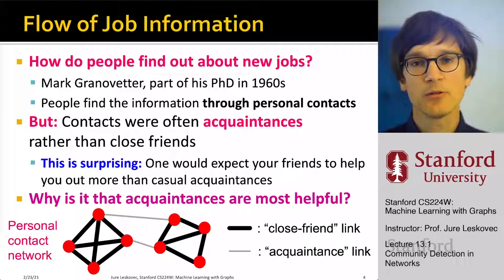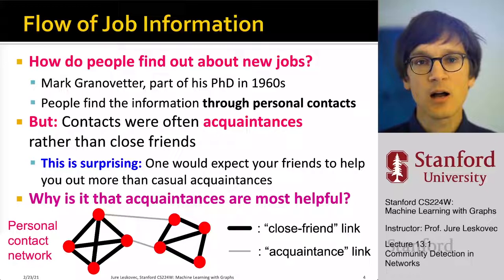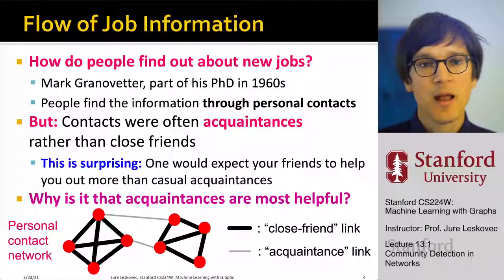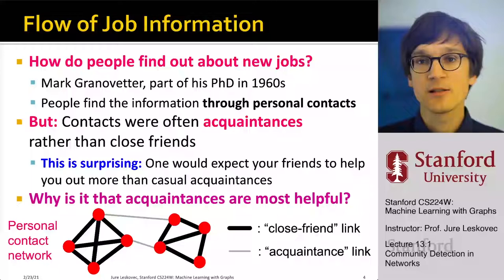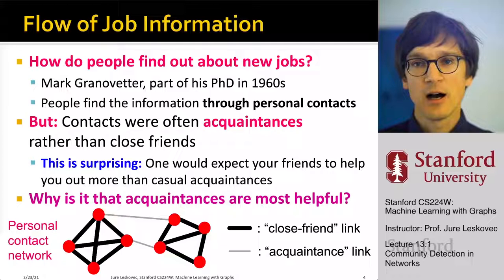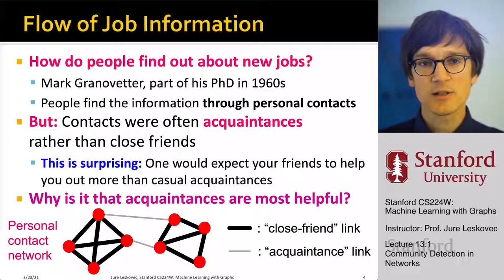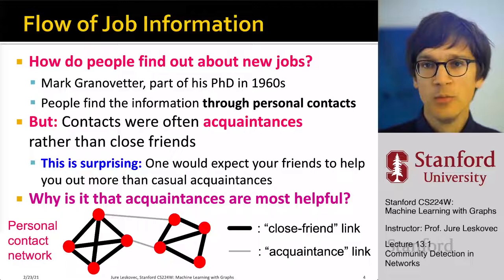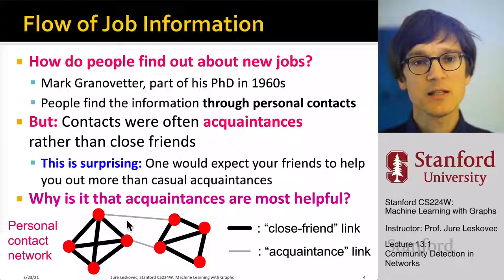People didn't hear about new job openings from those they had very strong relationships with — people they spent a lot of time with — but rather through acquaintances, people they would meet more rarely. This was surprising because you would imagine it's your friends, people with strong relationships, whose best interest is to help you and who are most motivated to connect you with job openings. But it turned out to be casual acquaintances through whom job seekers found new jobs.